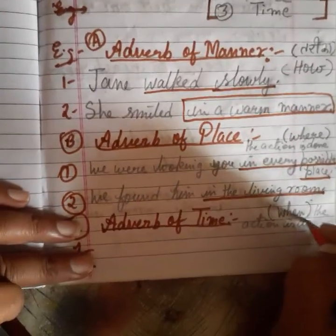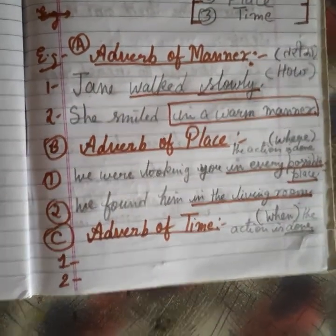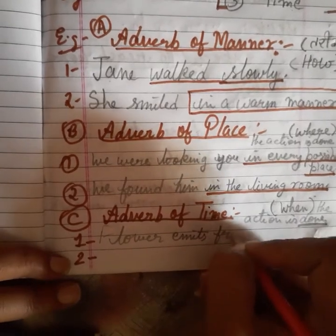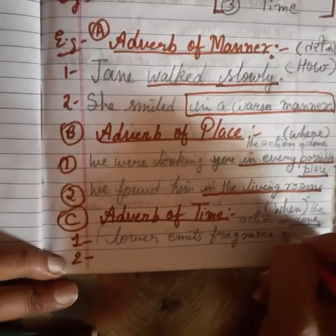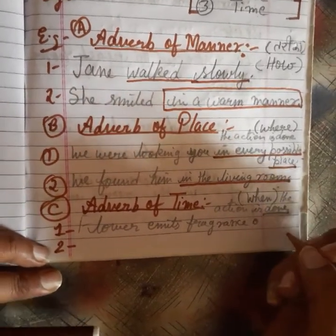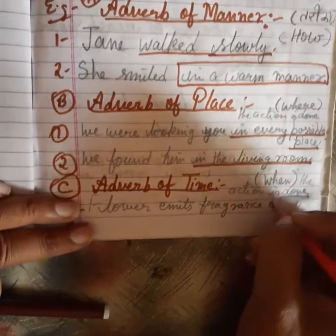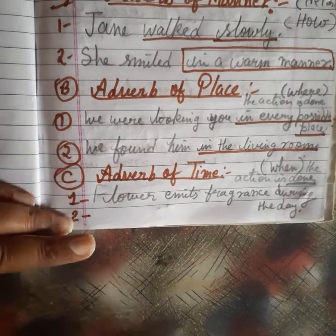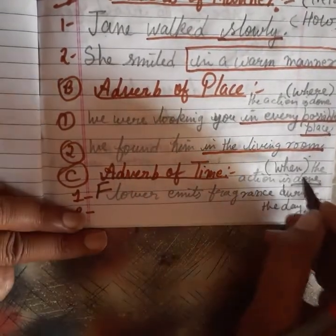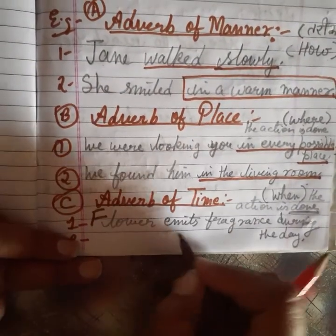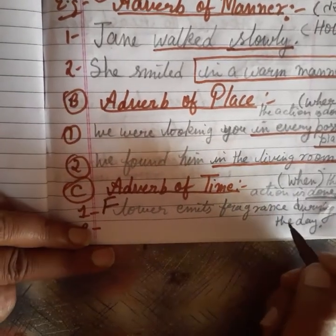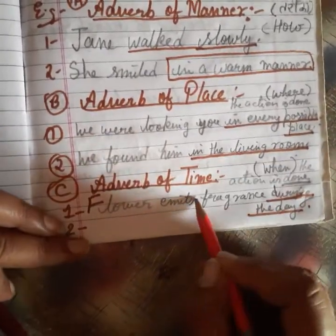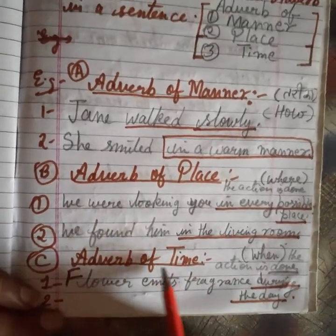अब adverb of time — कब action done हुआ। Example: 'Flower emits fragrance during the day.' When does flower emit fragrance? इसका answer है 'during the day' — पूरे दिन। 'When' लगा के answer आपको मिल गया, तो 'during the day' यहाँ adverbial phrase of time show करेगा।